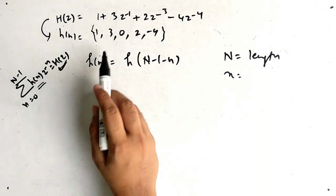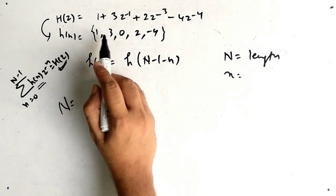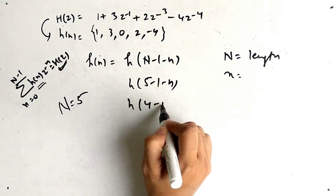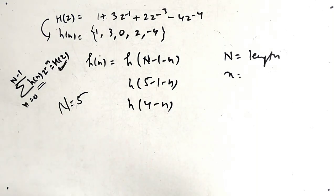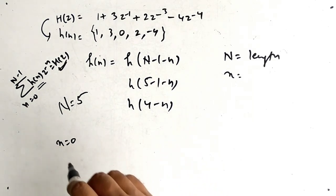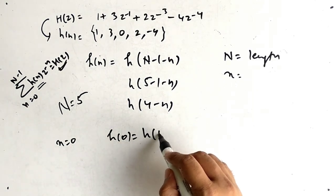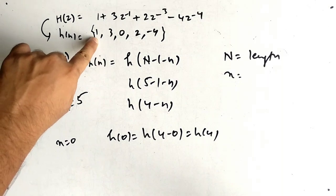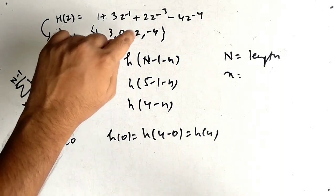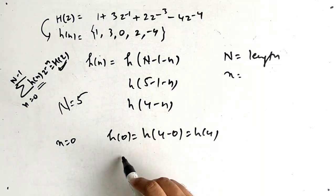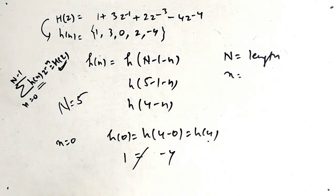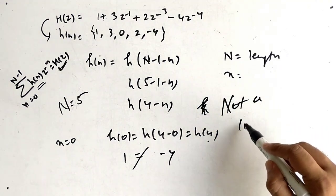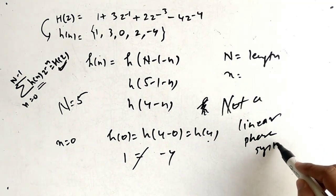The length N = 5, so the condition becomes h(n) = h(4−n). Checking n=0: h(0) should equal h(4). h(0) = 1 but h(4) = −4 — these are not equal. So this is NOT a linear phase system, and we cannot draw a linear phase realization for it.